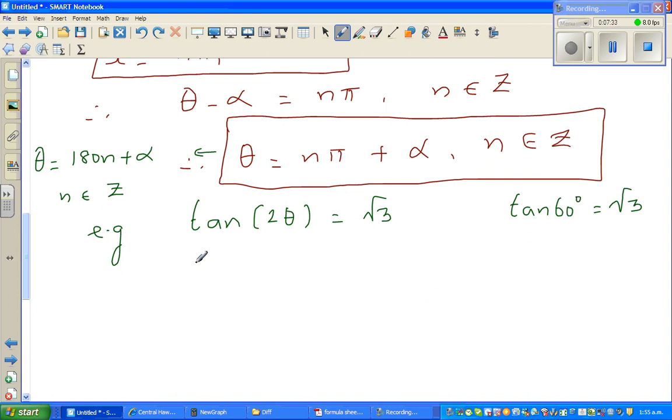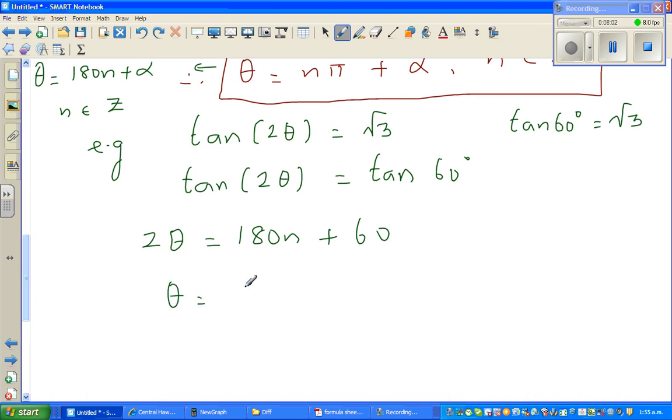So I can say tan 2θ is equal to tan 60. So using this formula, I can say 2θ is equal to 180n plus α. What's your α here? Alpha is 60. So now dividing by 2, θ is 180—sorry, 180 divided by 2 is 90. So it's 90n plus 30. So this is your general solution.